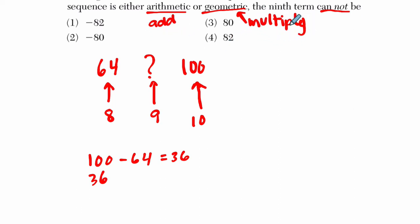Because with an arithmetic sequence, we add the same amount each time. A geometric sequence, we multiply the same amount. So what could we add twice to get 36? It's 36 divided by 2, and we could add 18.